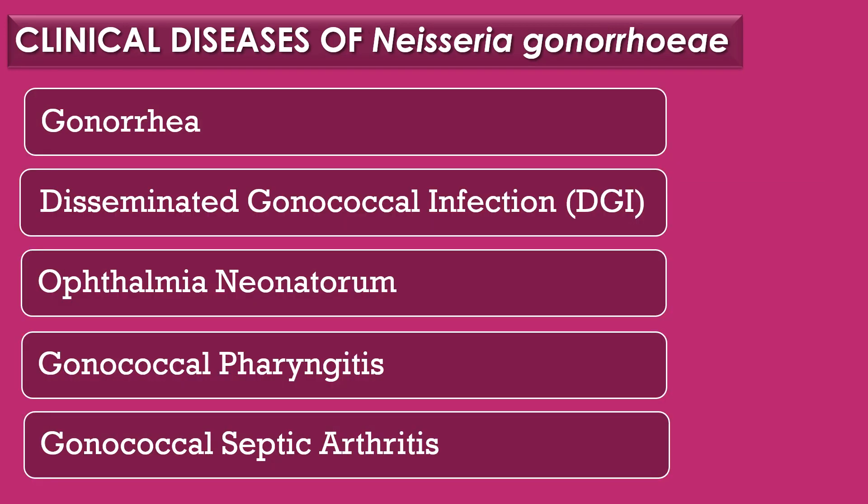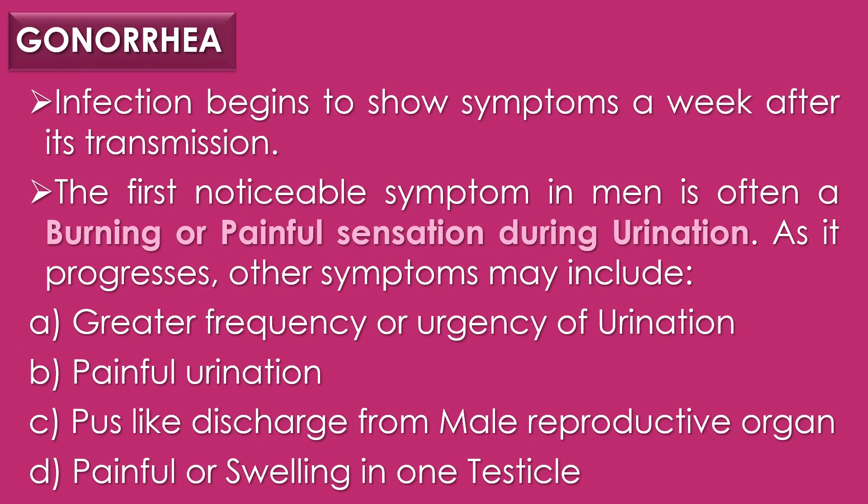Clinical diseases of Neisseria gonorrhoeae: Neisseria gonorrhoeae results in 5 clinical diseases. The first clinical disease caused by Neisseria gonorrhoeae is gonorrhea. Typically, the infection begins to show symptoms about a week after its transmission. The first noticeable symptom in men is often a burning or painful sensation during urination.